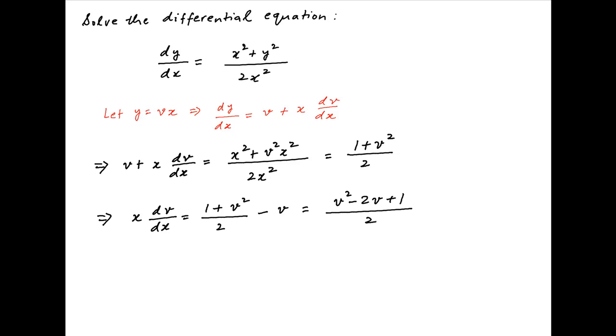The right-hand side equals (v² minus 2v plus 1)/2, which can be written as (1 minus v)² over 2.